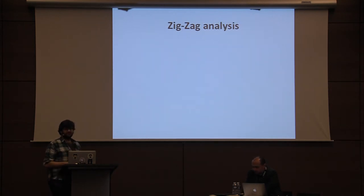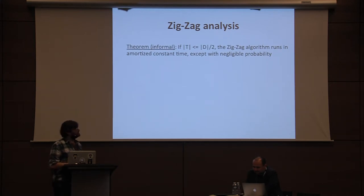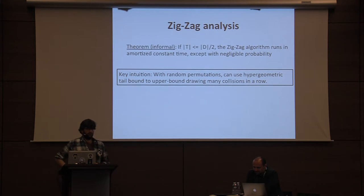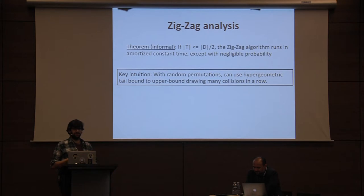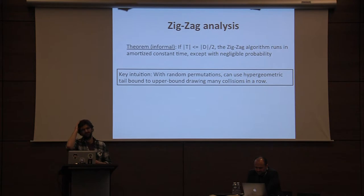Some analysis of this algorithm: if the set T is at most half the size of the domain D, the zigzag algorithm runs in amortized constant time over a sequence of encryption and decryption queries, except with negligible probability. The intuition is that the sampling experiment can be modeled as a sampling-without-replacement experiment from combinatorics.